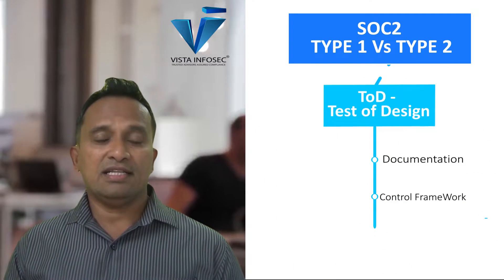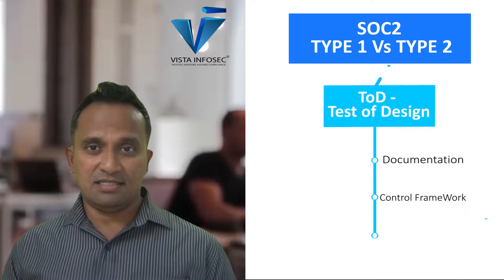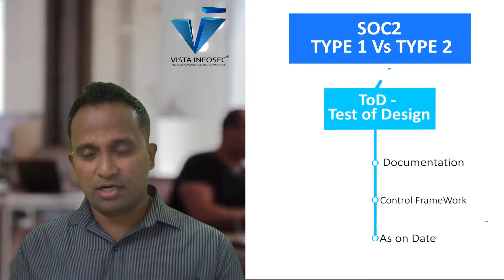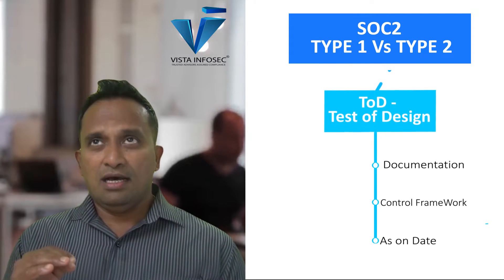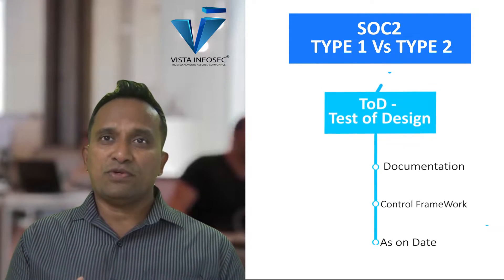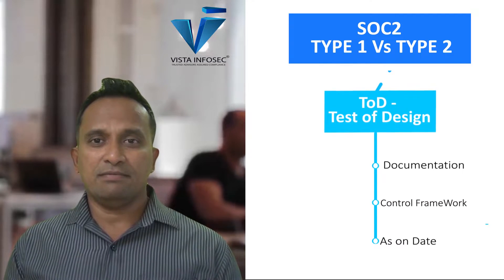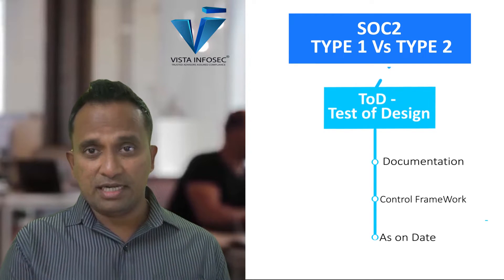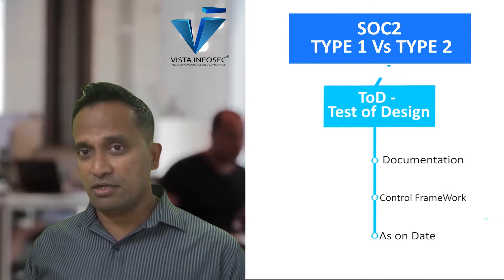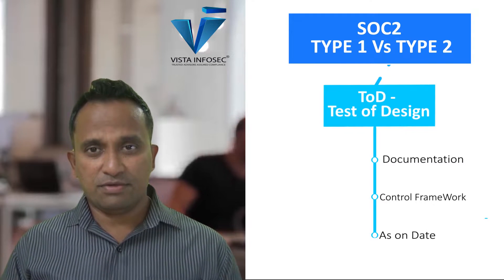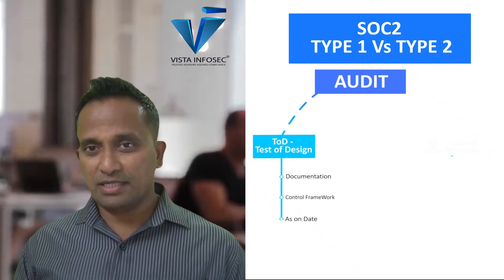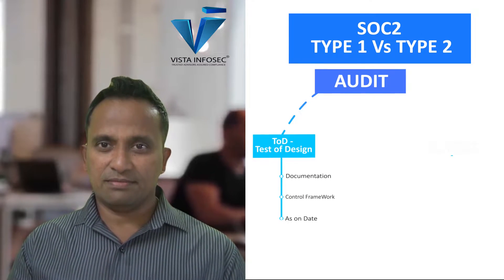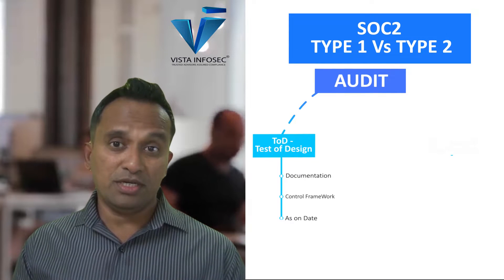A Type 1 audit is an as-on-date audit — a point-in-time snapshot. For example, for change management, the auditor would simply ask to see one or two change reports. For antivirus, they check whether it's up to date. For problem resolution, they check your last sequence. That is what a Stage 1 or Type 1 audit is — it confirms you are fine as of today.